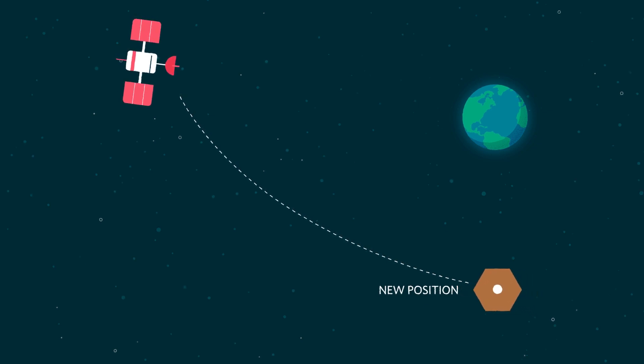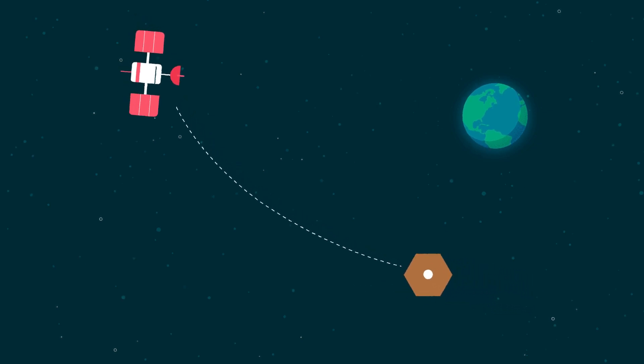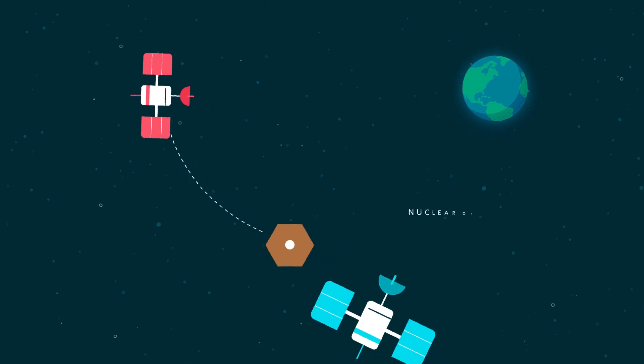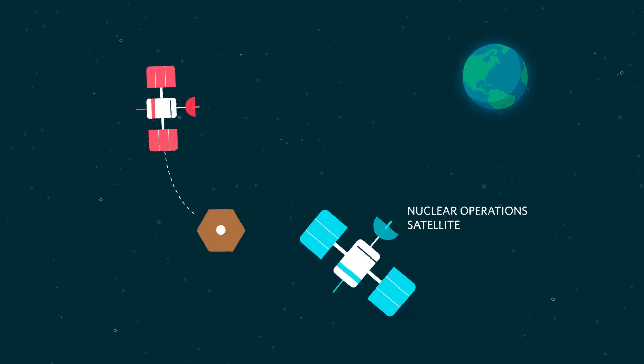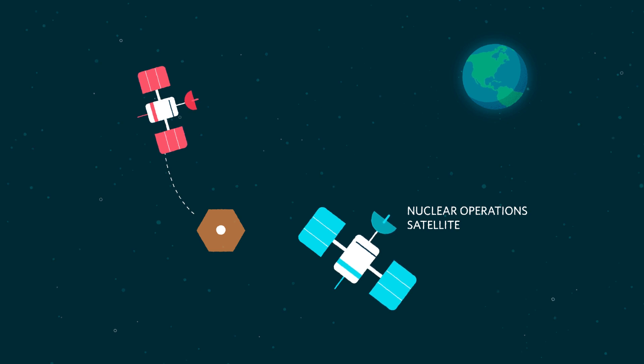Satellites are periodically repositioned to optimize their performance. If repositioning brought a satellite into proximity with one involved in nuclear operations, it could be misconstrued as the start of an attack and, hence, preparations for nuclear war. The results could be catastrophic.